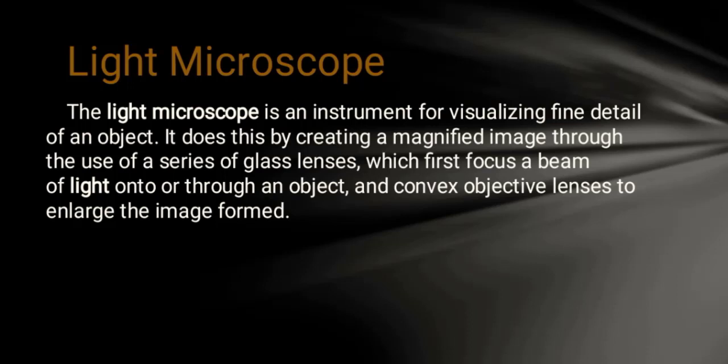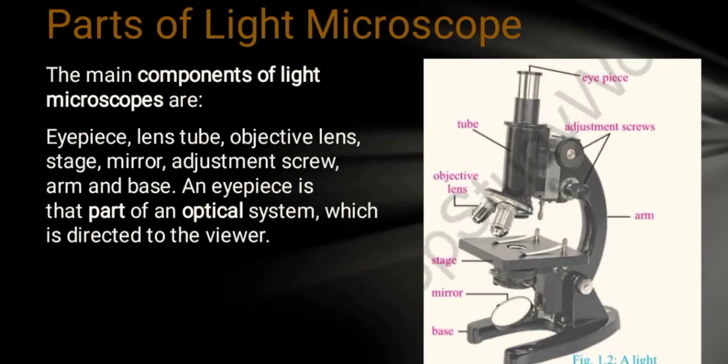Light microscope: the light microscope is a combination of glass lenses. It is the main component used to visualize objects that we cannot see with the naked eye.